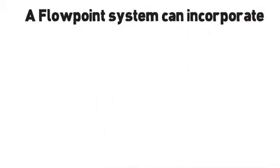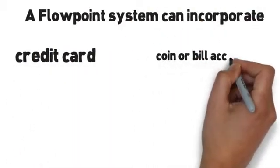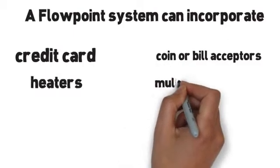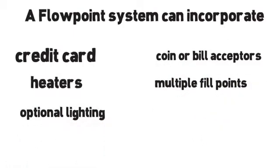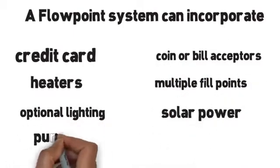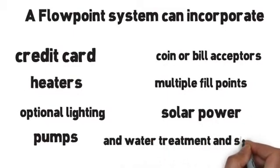A FlowPoint system can incorporate credit card, coin or bill acceptors, heaters, multiple fill points, optional lighting, solar power, pumps, and water treatment and storage.